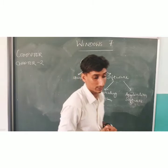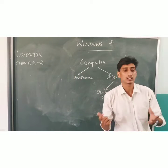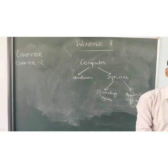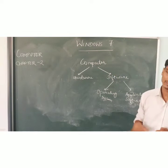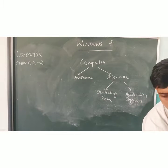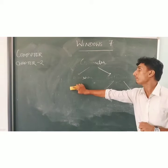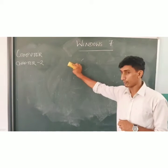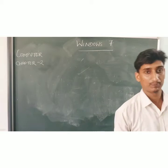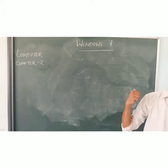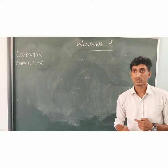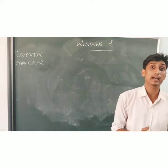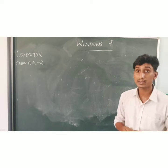Examples of operating systems include MS-DOS, Windows, Linux, and Ubuntu. Today we will study Windows 7. Windows 7 operating system is developed by Microsoft, which is a software company. It developed Windows 7 in 2009 for home use and for business purpose.